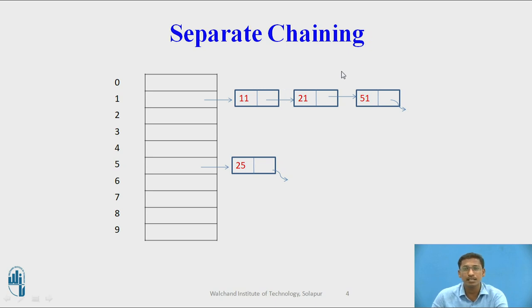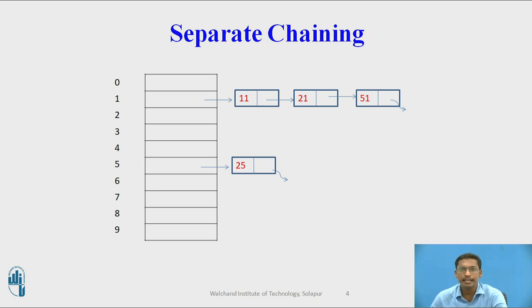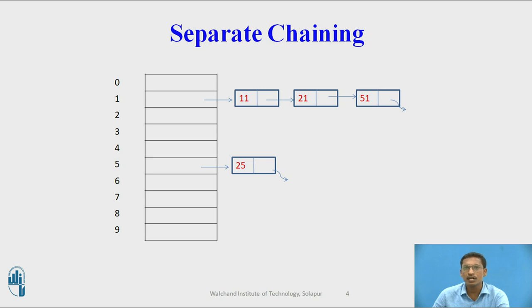The advantage of separate chaining is that there is no size limit, because memory allocated in a linked list is dynamic. So size is not limited when using separate chaining.